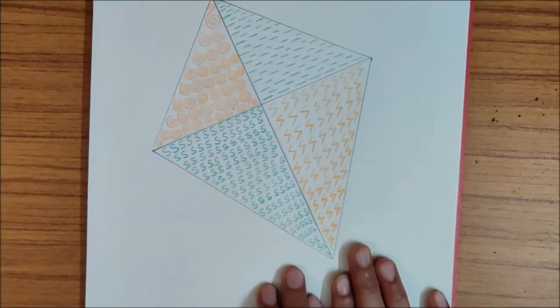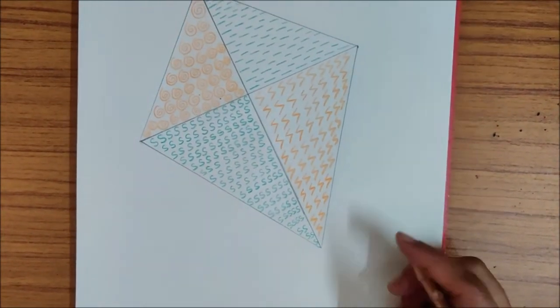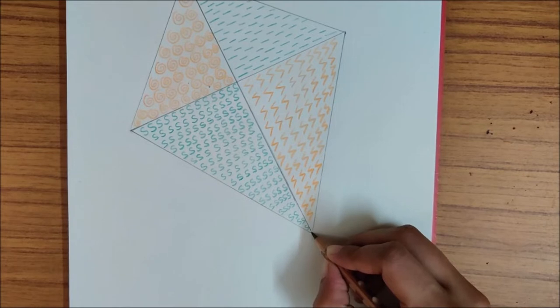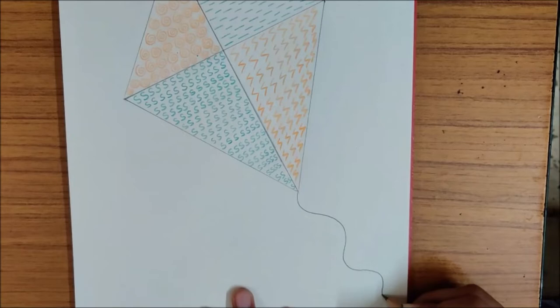And now, we are going to make string of this kite. So here with pencil children, draw a string like this.